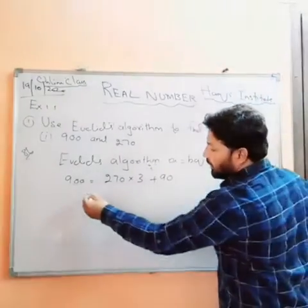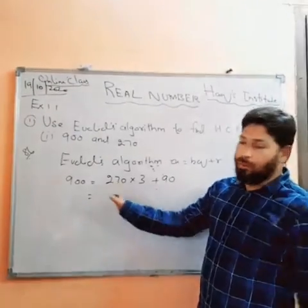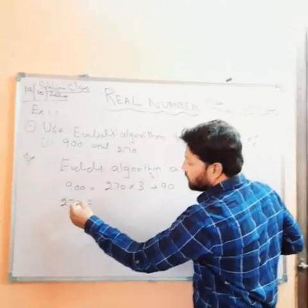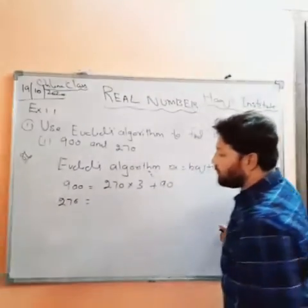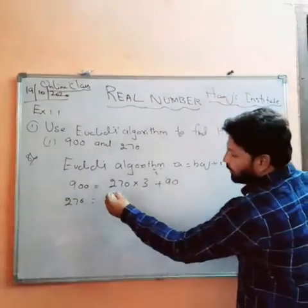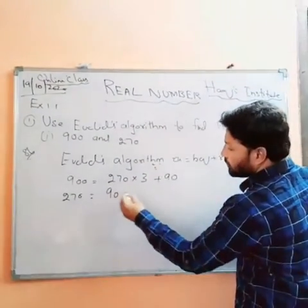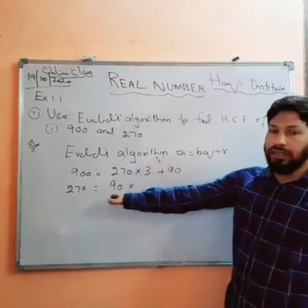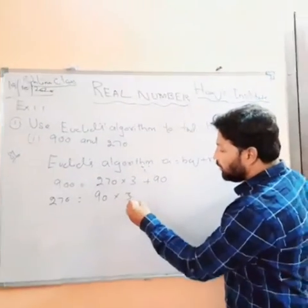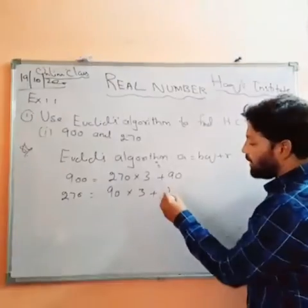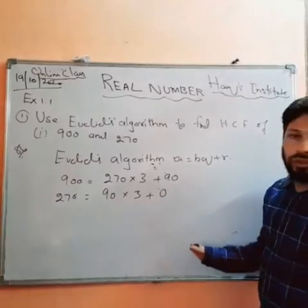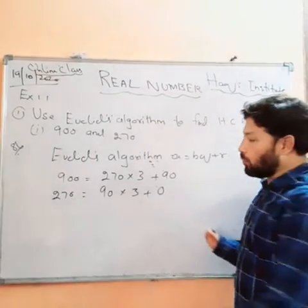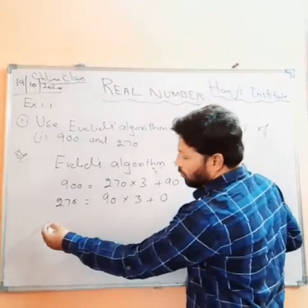In the next step, the divisor will become the dividend, and the remainder will become the divisor. Again, if you multiply 90 with 3, you will get the remainder as 0. If you are getting remainder as 0, then your problem has been solved.